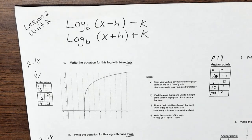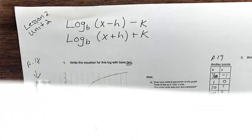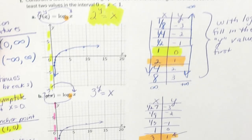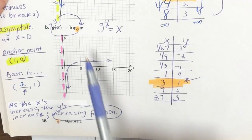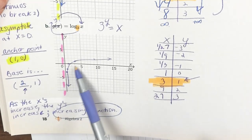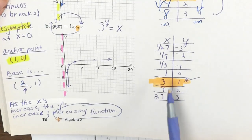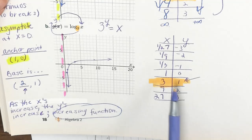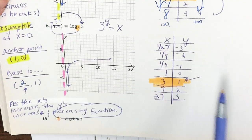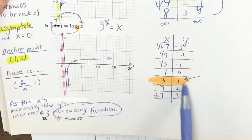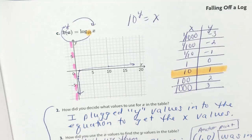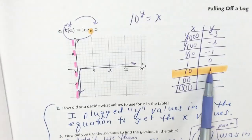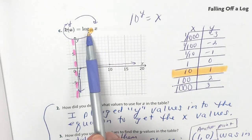Today in class we started by looking at page 18. If you were here yesterday, this was part of your homework, so your graph should look like this. A quick note: my base is 3, not only because it's labeled, but when you find the point where y equals one, the x-value is your base. Here I've got the number one, so I know I'm base 10.